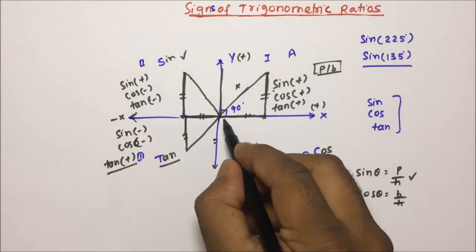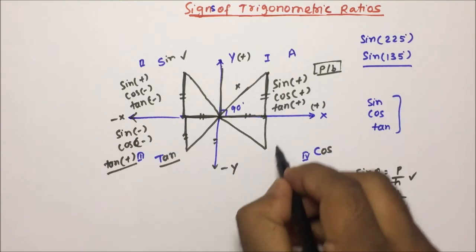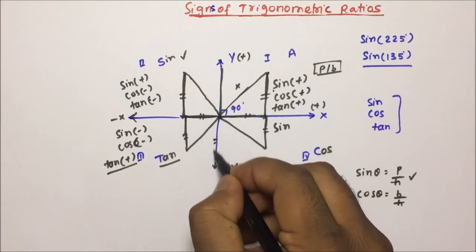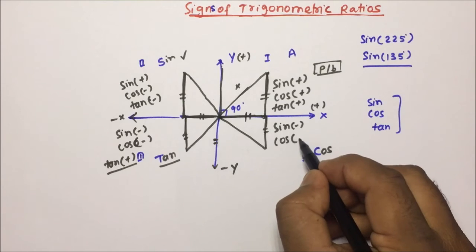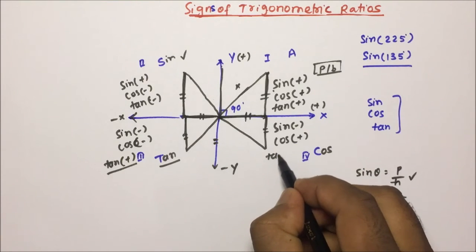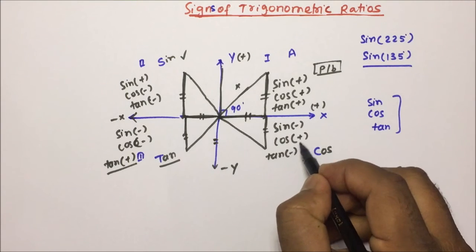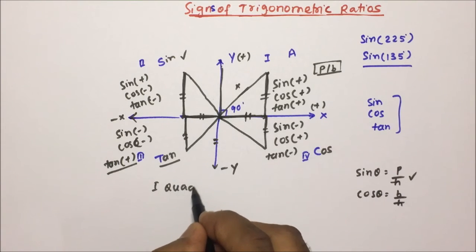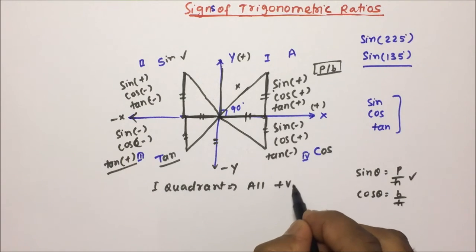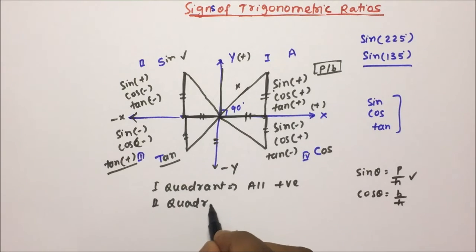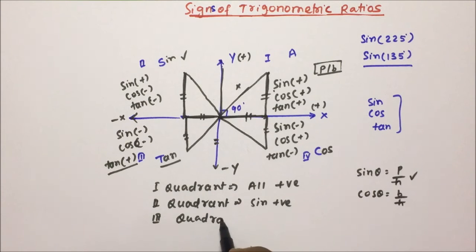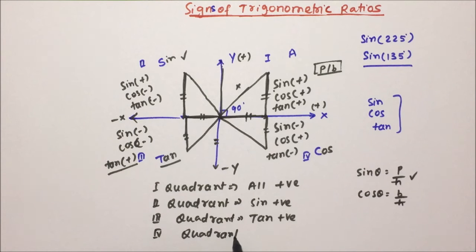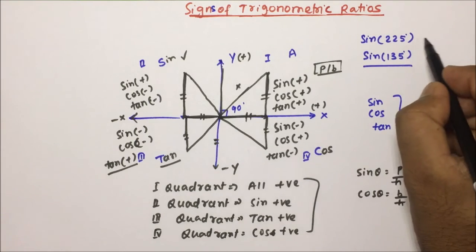In the fourth quadrant, sine — the perpendicular is along the negative y-axis, so sine is minus. Cos — the base is along the positive x-axis, so cos is plus. Tan equals sine by cos, so minus divided by plus is minus. So in the fourth quadrant, only cos is positive. To summarize: first quadrant — all Trigonometric ratios are positive; second quadrant — only sine is positive; third quadrant — only tan is positive; fourth quadrant — only cos is positive.